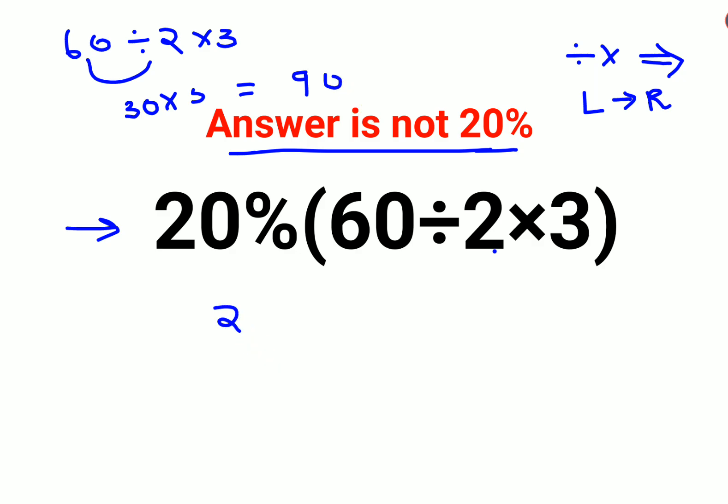So 20%, please understand, percent is nothing but converting the number into a fraction by dividing that number by 100. So this is 20 upon 100 into 90. This entire bracket value is coming out to be 90. So the zeros are cancelling. I am left with the answer, which is 18.